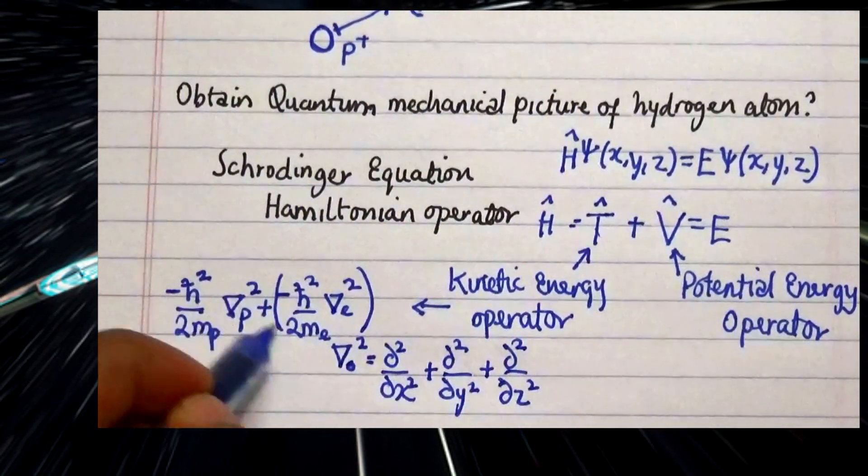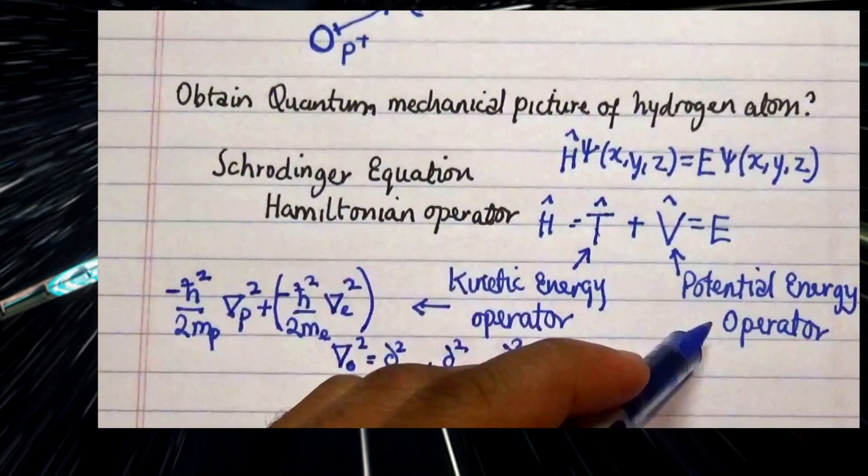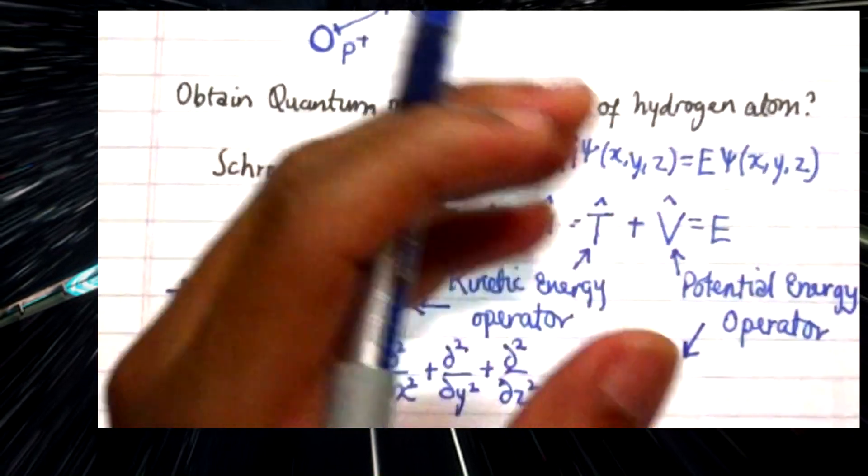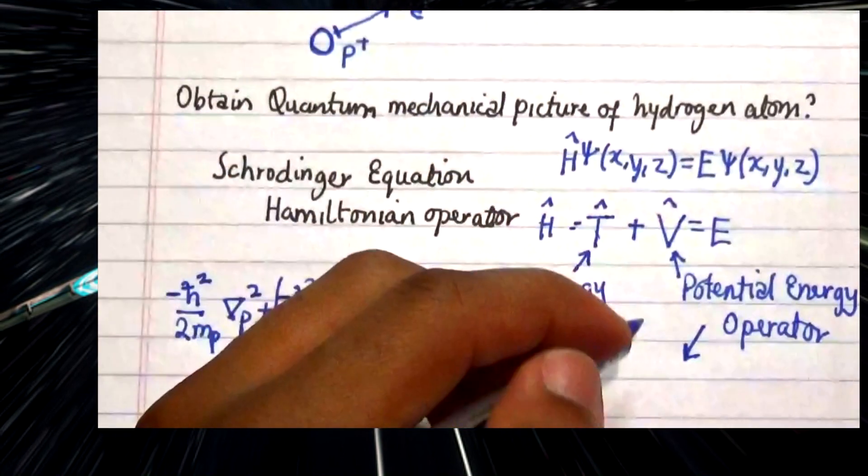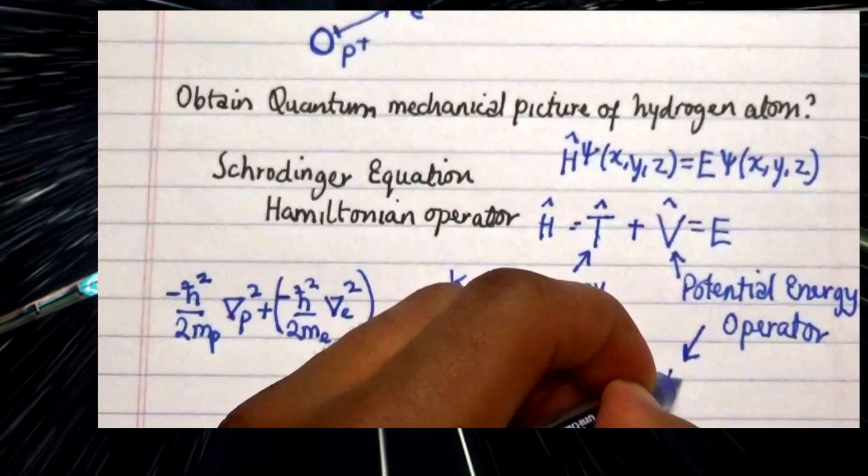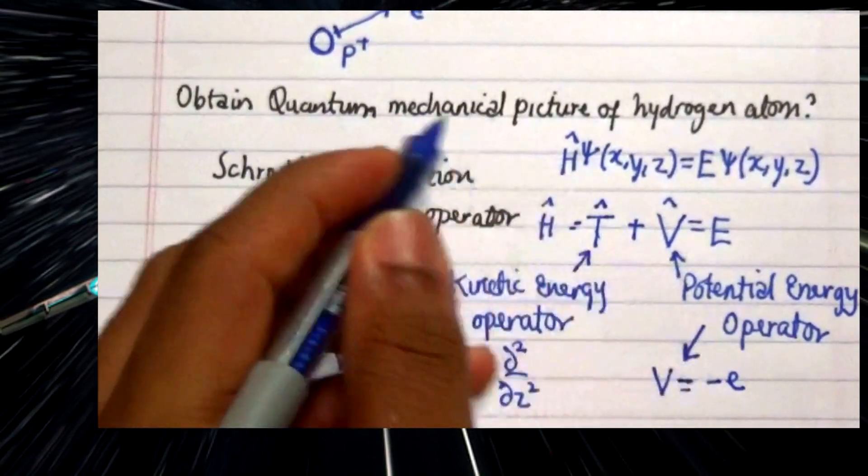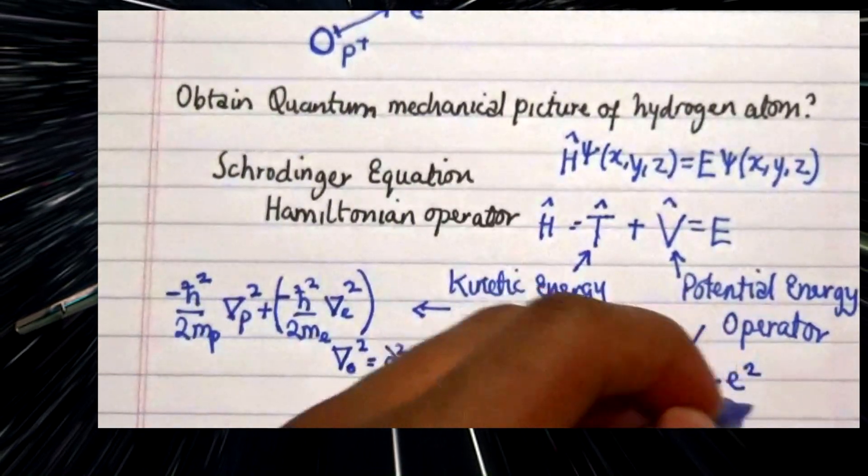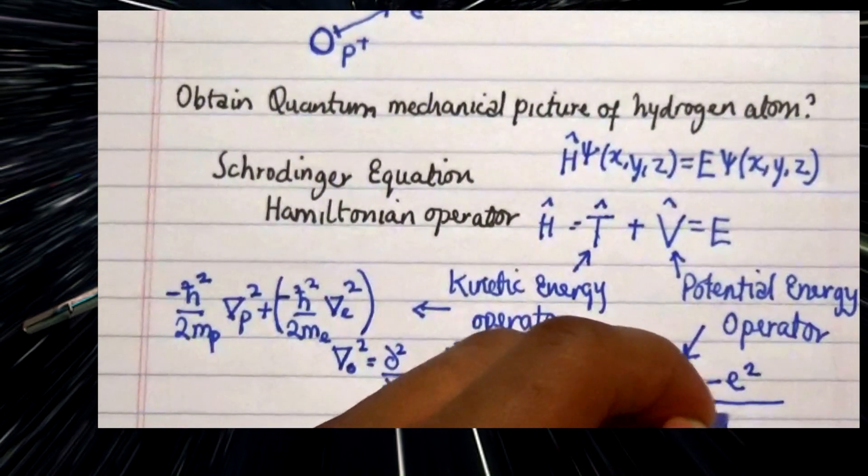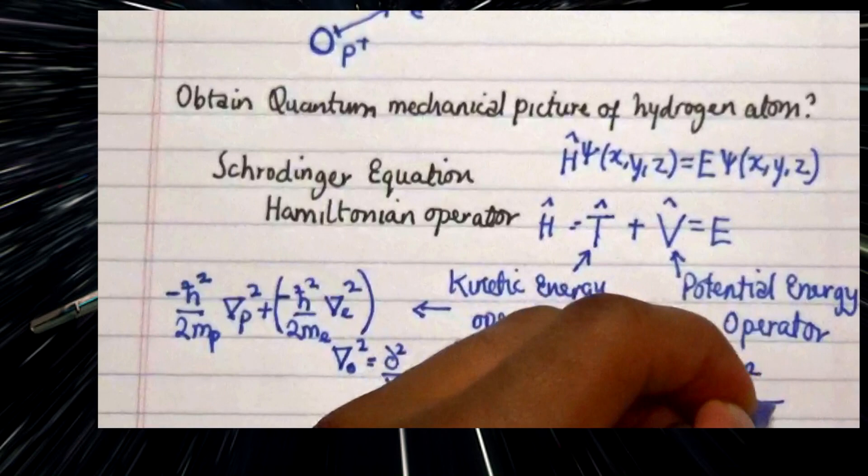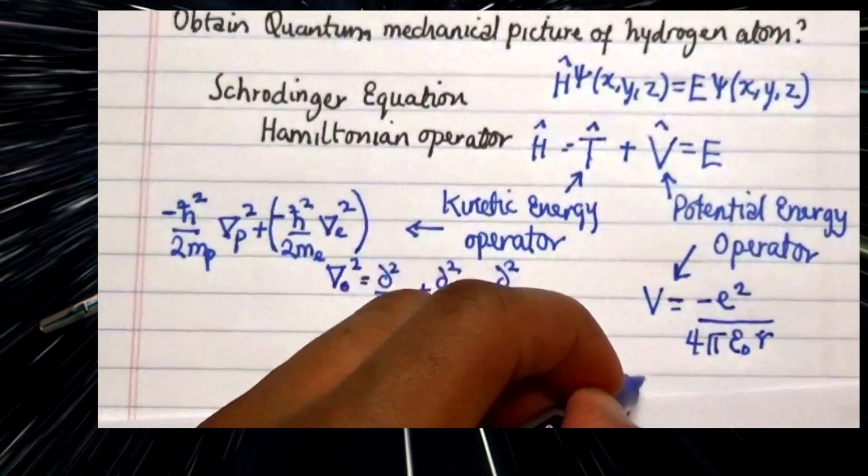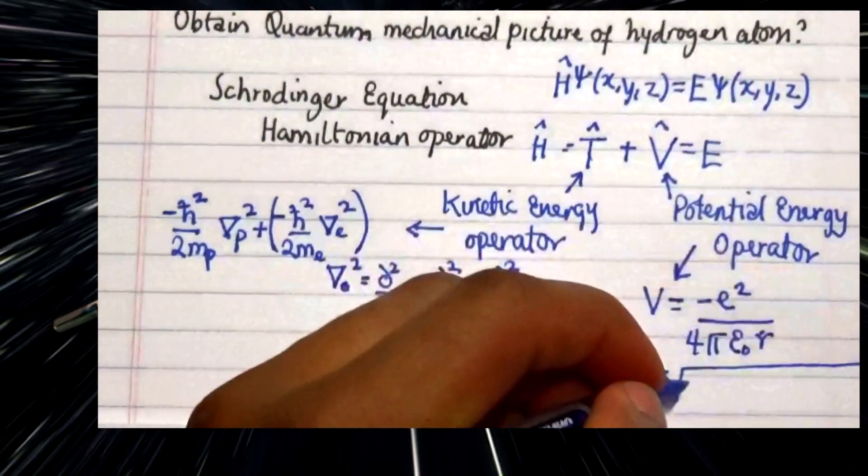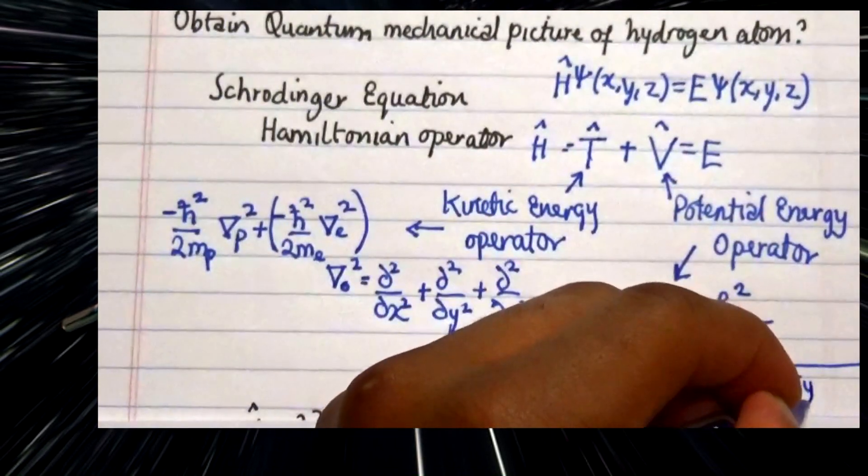Once you are able to recognize this formula, our next one is to focus on our potential operator. The potential operator energy is relative to the Coulombic force or energies between the proton and the electron. For our Coulombic energy what we have is negative e squared over 4 pi epsilon r. Take note that our r is the distance between our proton and electron in the x, y, and z coordinates in the 3D space.